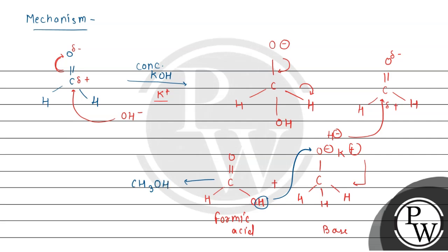And the other product has O minus and K plus, forming a salt. These are the final products: methyl alcohol and salt.